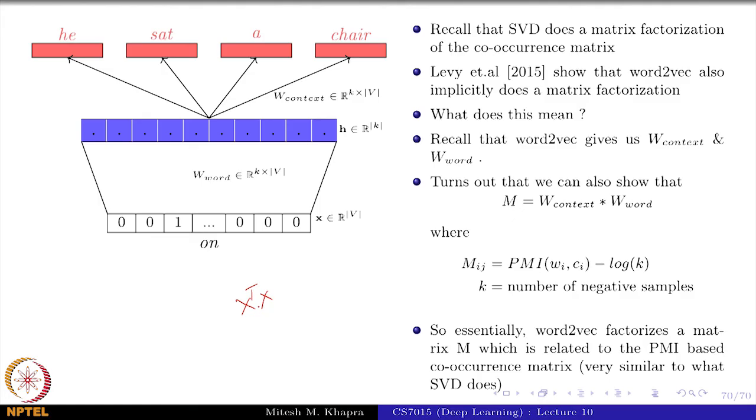That's more computationally efficient, especially if you do the contrastive divergence or the negative sampling or the hierarchical softmax.